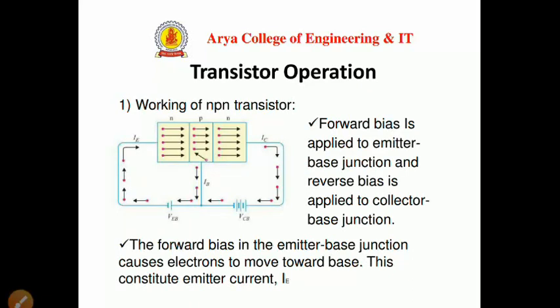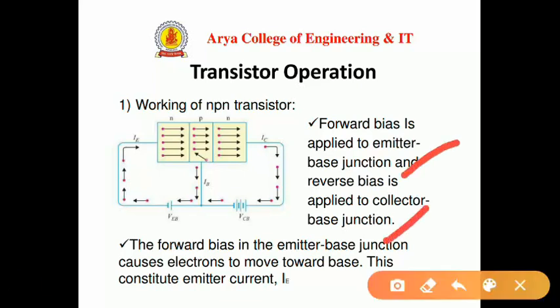Now let's look at transistor operation — how a transistor works. The working of the transistor is shown in the figure. Forward bias is applied to the emitter-base junction and reverse bias is applied to the collector-base junction. For an NPN transistor, the N region is connected to the negative terminal of the battery and P is connected to the positive terminal, making the first junction forward biased. In the collector-base junction, N is connected to the positive terminal and P to the negative terminal, so it is reverse biased.